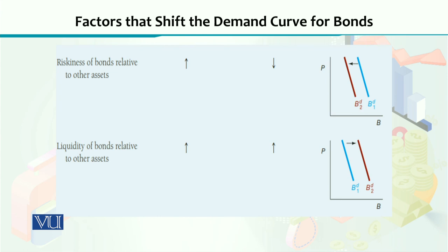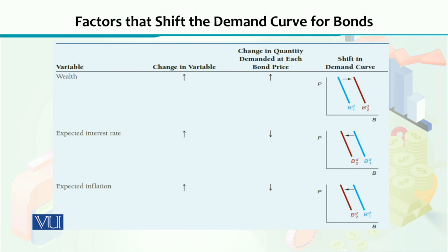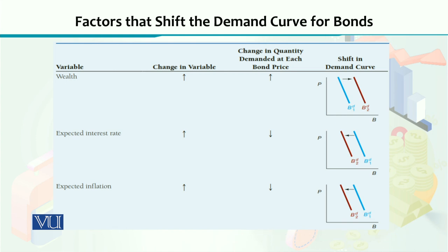So we can say that due to the changes in all the factors we have just discussed — such as liquidity, riskiness, wealth, expected inflation, and expected interest rate — when any of these increase یا decrease آئیں، they will always result in a forward or a backward shift in the demand curve. But to move along the demand curve — یعنی demand curve کے اوپر یا نیچے جانے کے لیے — ہمیں price کے اندر کمی اور بیشی کو دیکھنا پڑتا ہے. اگر آپ نے shifts دکھانے ہوں تو ان تمام factors میں سے کوئی ایک increase یا decrease ہوگا، تو آپ کو shifts کی form میں اس change کو دکھانا پڑے گا.